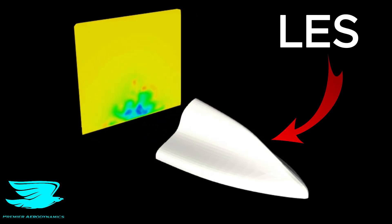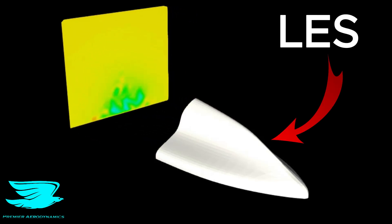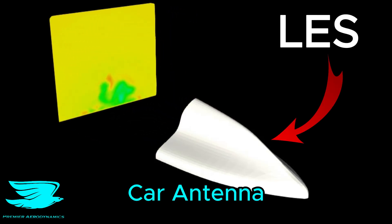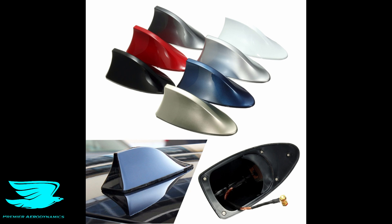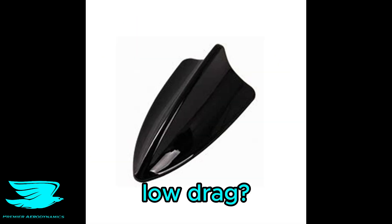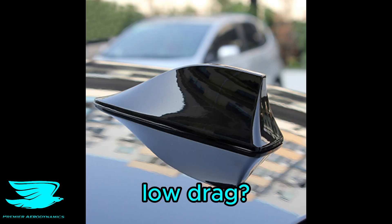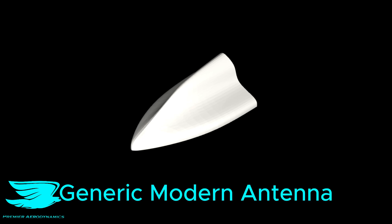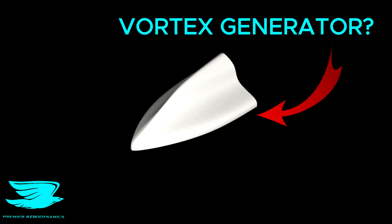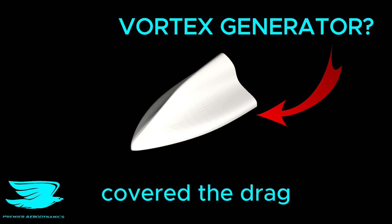We did an LES CFD simulation of a car antenna to find out if it's aerodynamic, because over the years car manufacturers have put in a ton of effort to make them low drag. Has it worked? To find out, we have a generic modern car antenna here, and it looks a lot like a vortex generator, so we investigated this as well — we'll go through those results at the end after we've covered the drag.